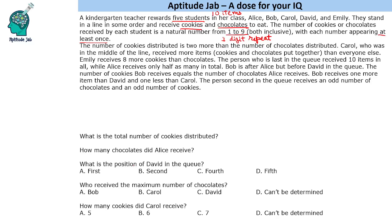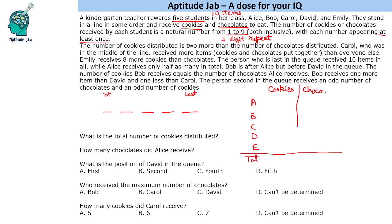Looking at the questions: total number of cookies distributed, chocolates received, position of David, etc. We will make a table — these are the five people standing in a queue from first to last — and we will also find the number of cookies and chocolates. We have five people A, B, C, D, E and their totals. We will solve this table and then answer the questions.